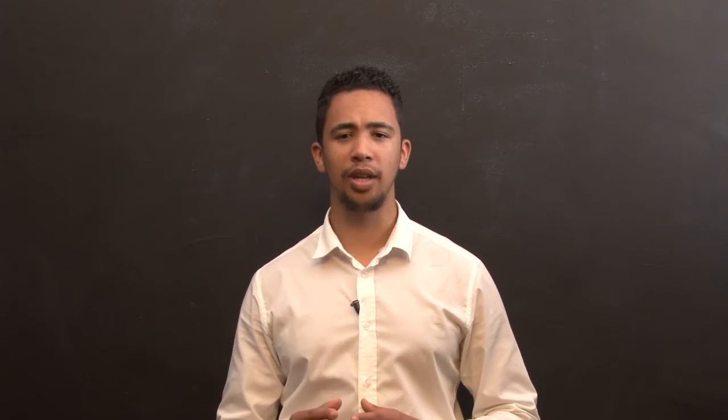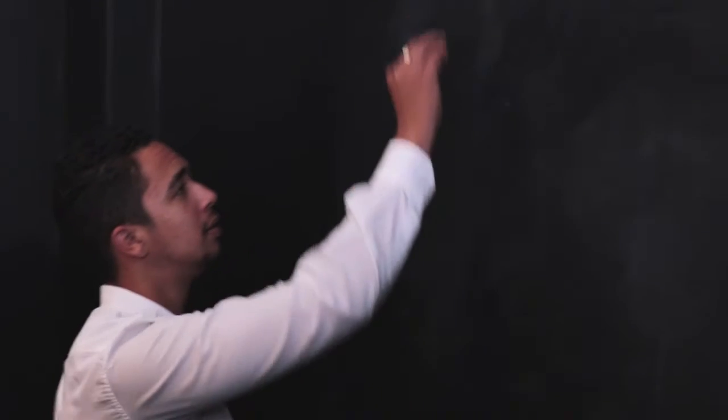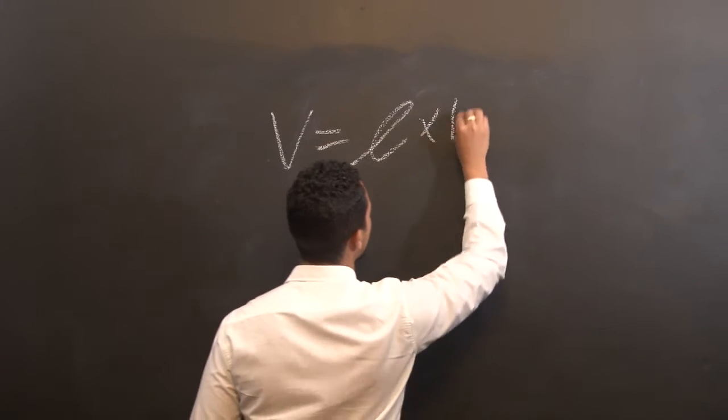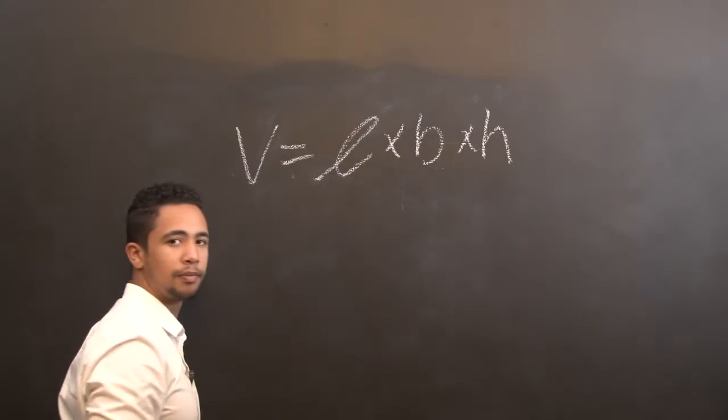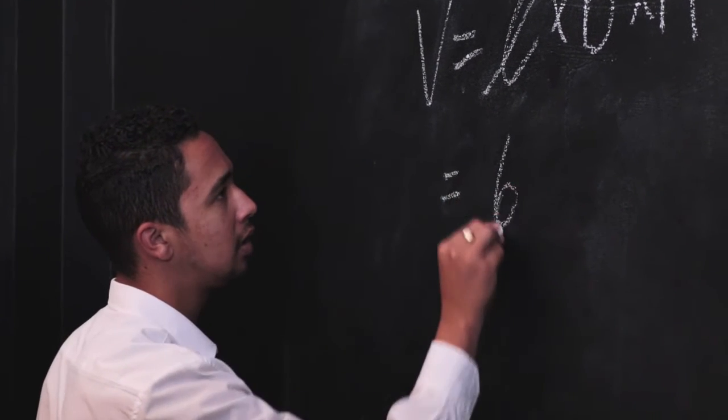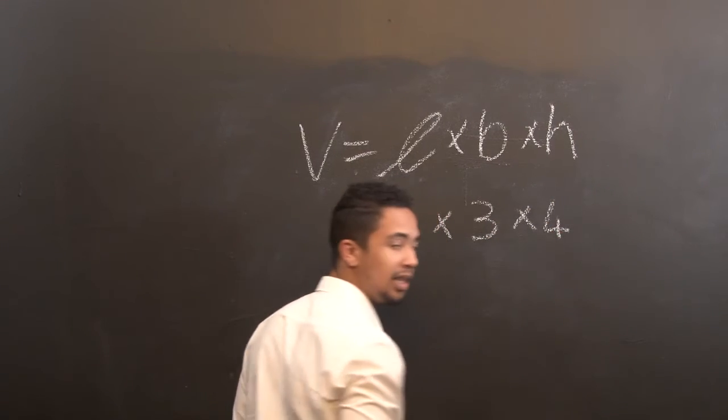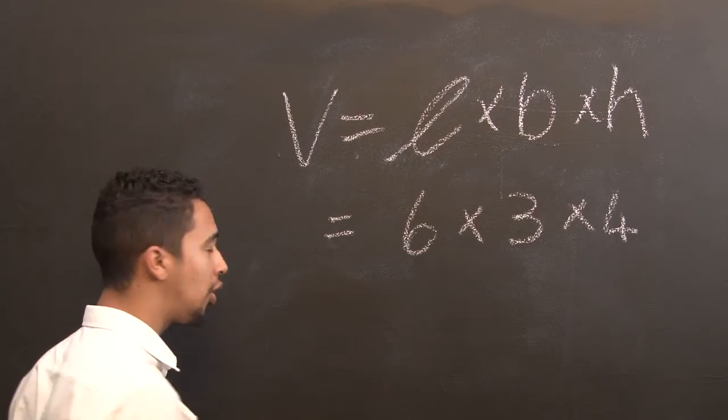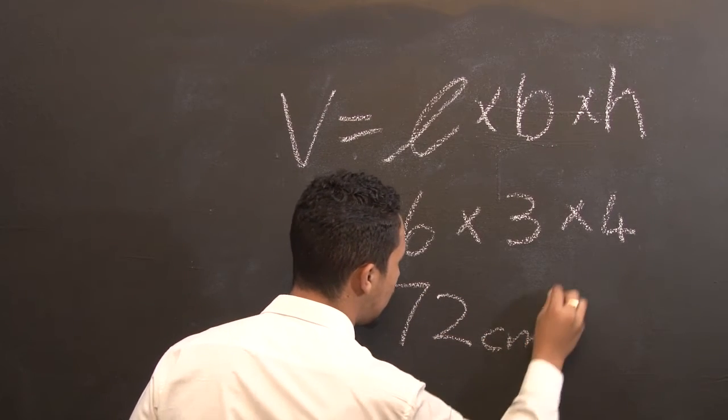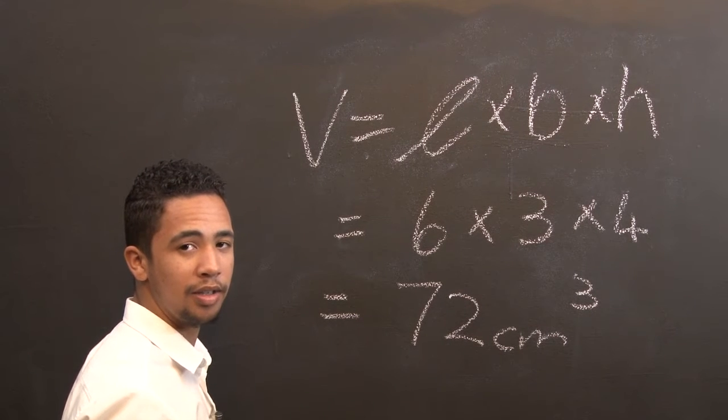Let's take a look at how to calculate the volume for the same shape. The formula for volume is length times breadth times height. As per our last example, the length was 6, the breadth was 3, and the height was 4 centimeters. So if you use your calculator, this equals to 72 centimeters cubed. Remember, volume is cubed, area is squared.